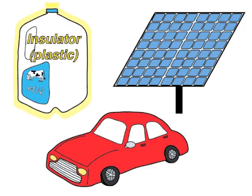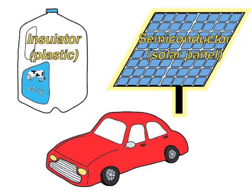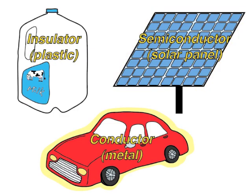An insulator requires a really large amount of energy, a semiconductor requires a medium amount of energy, and a conductor requires minimal or no energy to free electrons.